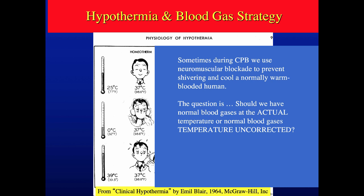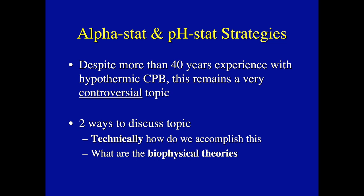During cardiopulmonary bypass, we use neuromuscular blockade to prevent shivering and cool a normally warm-blooded human down in temperature. The question remains: should we have normal blood gases at the actual temperature or normal blood gases that are temperature uncorrected? Despite more than 50 years of hypothermic bypass, this remains a controversial topic, especially in pediatrics. We can discuss how to technically implement each strategy and what physiological theories support them.